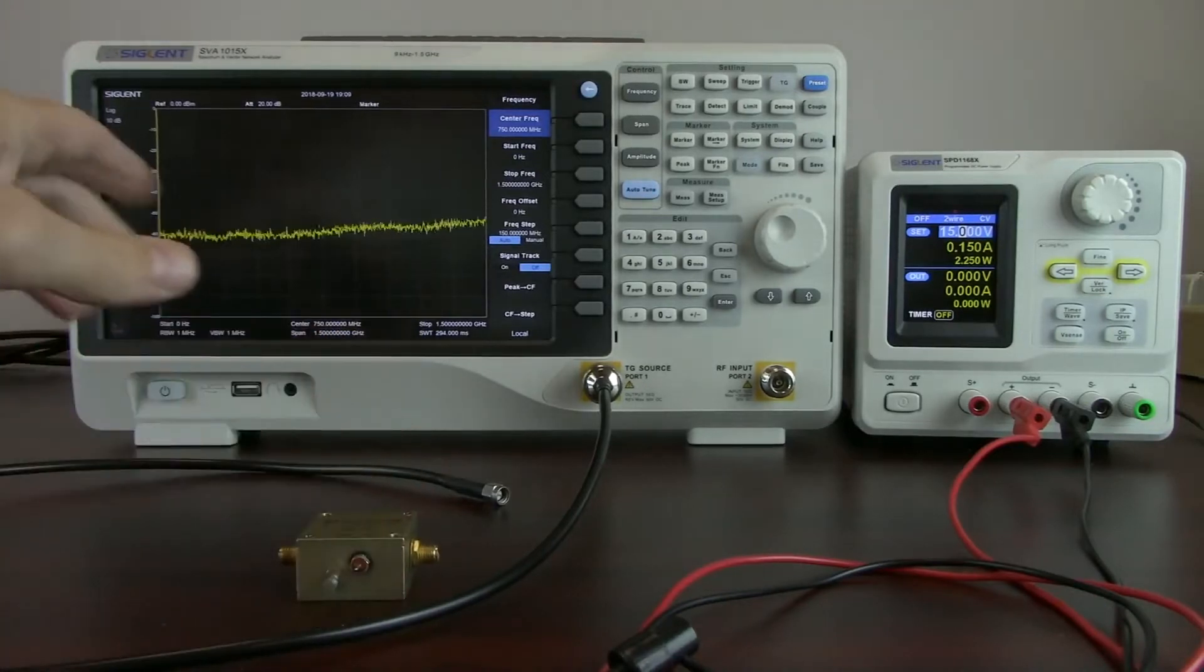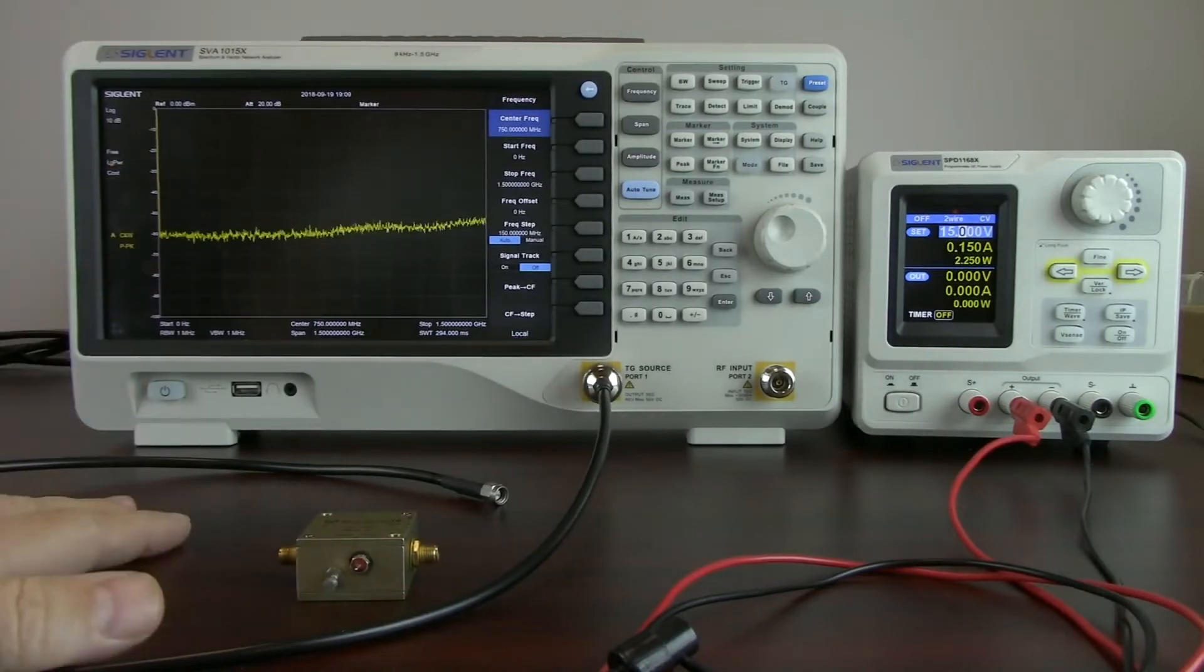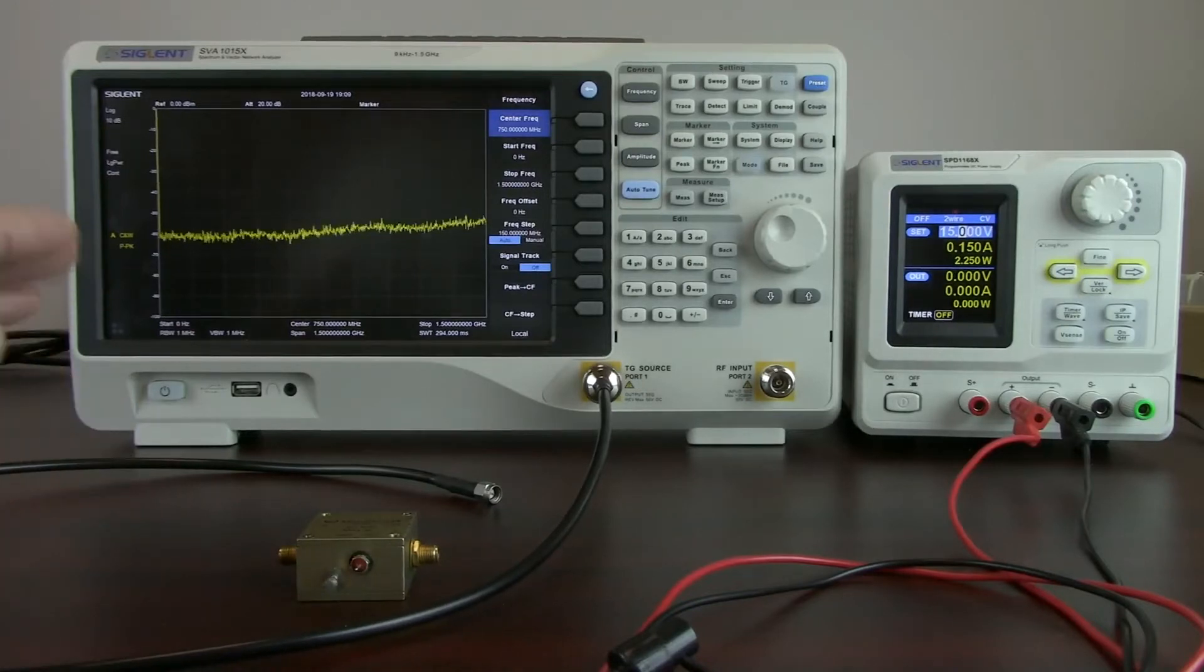I'm going to be using the SVA1015X Spectrum and Vector Network Analyzer. This actually has the VNA option or Vector Network Analyzer option, and that's the option that we're going to be using to perform this VSWR test.